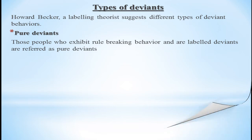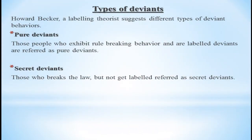Secret deviants — here the concept of primary deviancy comes in. They do exhibit deviant behavior, but nobody notices them and nobody labels them. That is primary deviancy. Those who break the law and violate social norms but do not get labelled are referred to as secret deviants. Because they are not labelled, they are considered secret deviants.